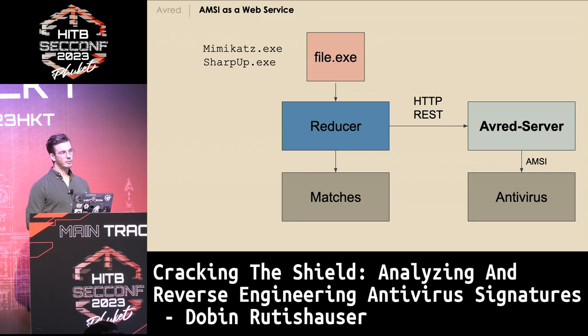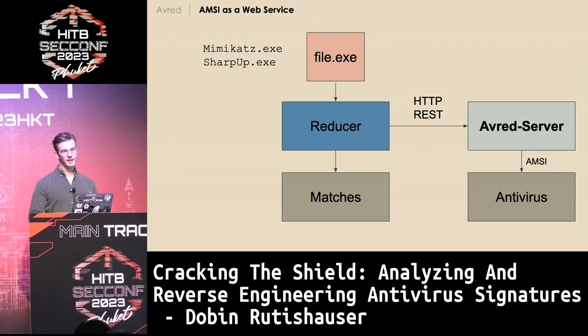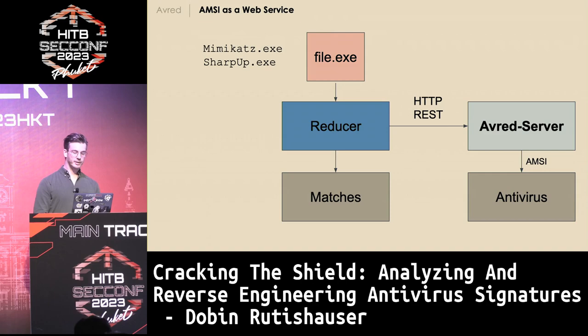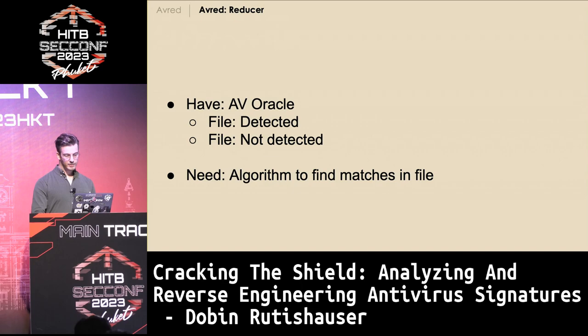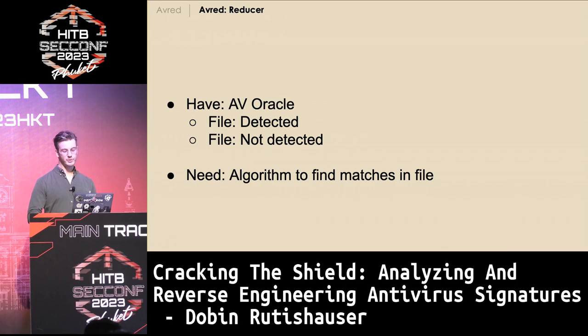We can put an HTTP server in front of AMSI, so we have all the virus scanning on a Windows system and all the analysis on a Linux system. You can also attach several antivirus products — just set up a Windows machine, install the antivirus, install the AV-RED server, and it becomes an oracle that says whether a file is detected or not.